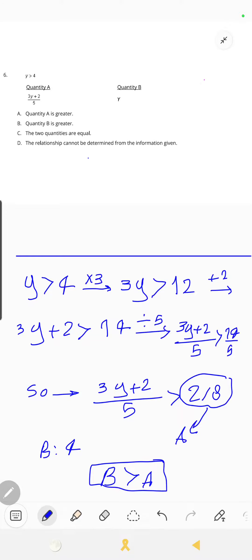This is Muhammad from mcosmi underline mass channel, and today we want to solve this problem from a GRE test. The problem is: if y is greater than 4, quantity A is (3y+2)/5 and quantity B is y.